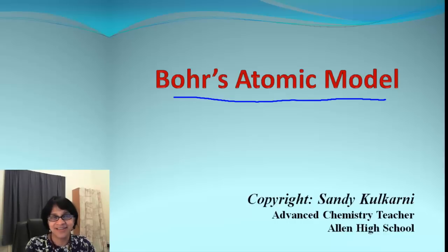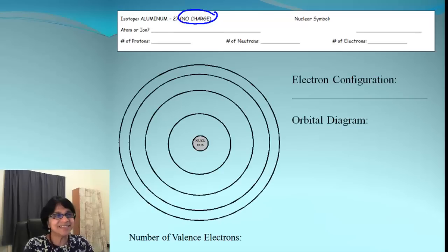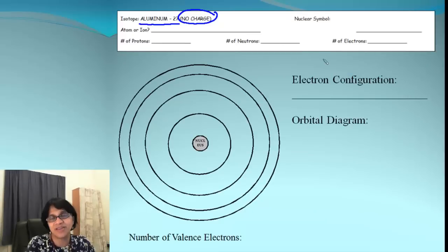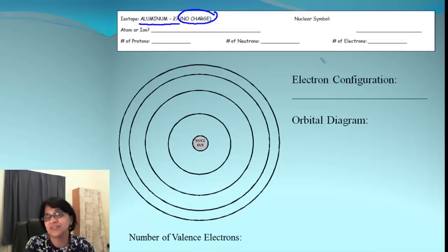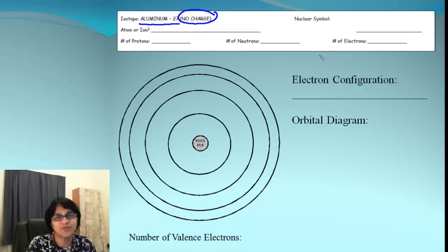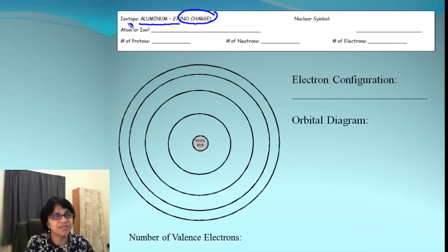So let's begin. This is our aluminum, and it says 27 is the atomic mass given. Whenever there is a number given, that indicates it's an isotope of aluminum with the atomic mass as 27. When we look carefully, it says no charge — if there's no charge, that means it is not an ion but it is an atom.